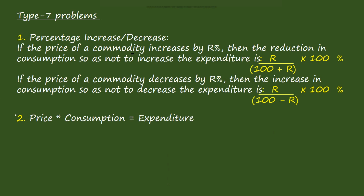First we understand the concept of price, consumption, and expenditure — it is very important. If you consider that a woman went to a shop and bought 5 kgs of sugar, then 5 kgs of sugar is called consumption. The price of each 1 kg is 100 rupees. Expenditure is 5 into 100, which becomes 500 rupees. So: price × consumption = expenditure.